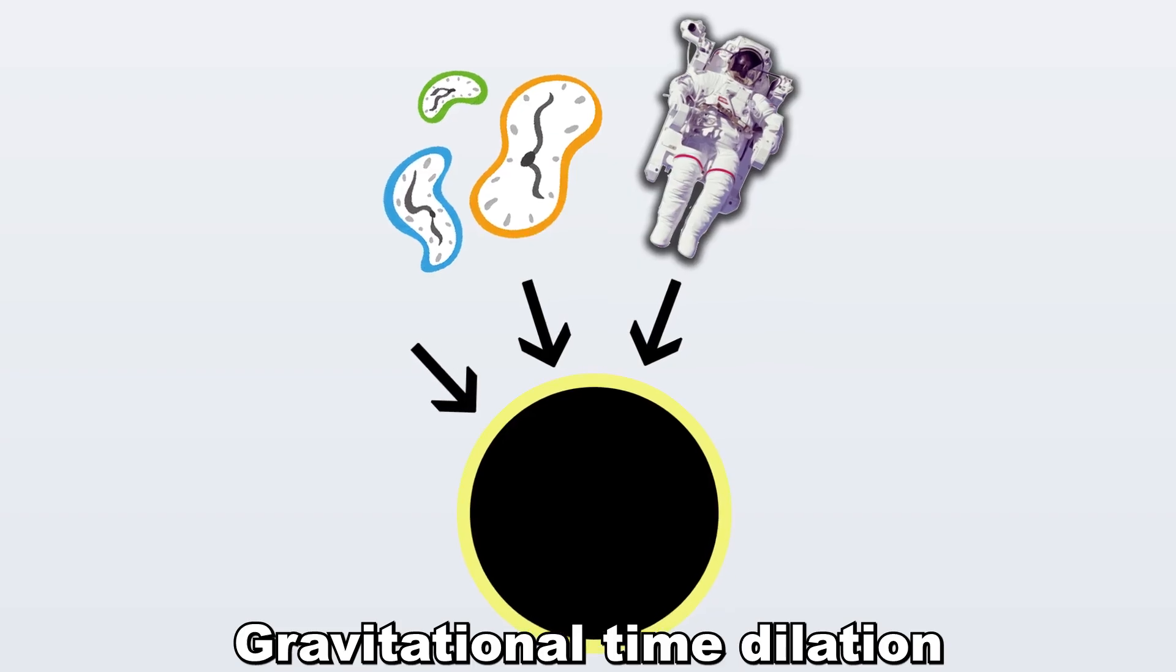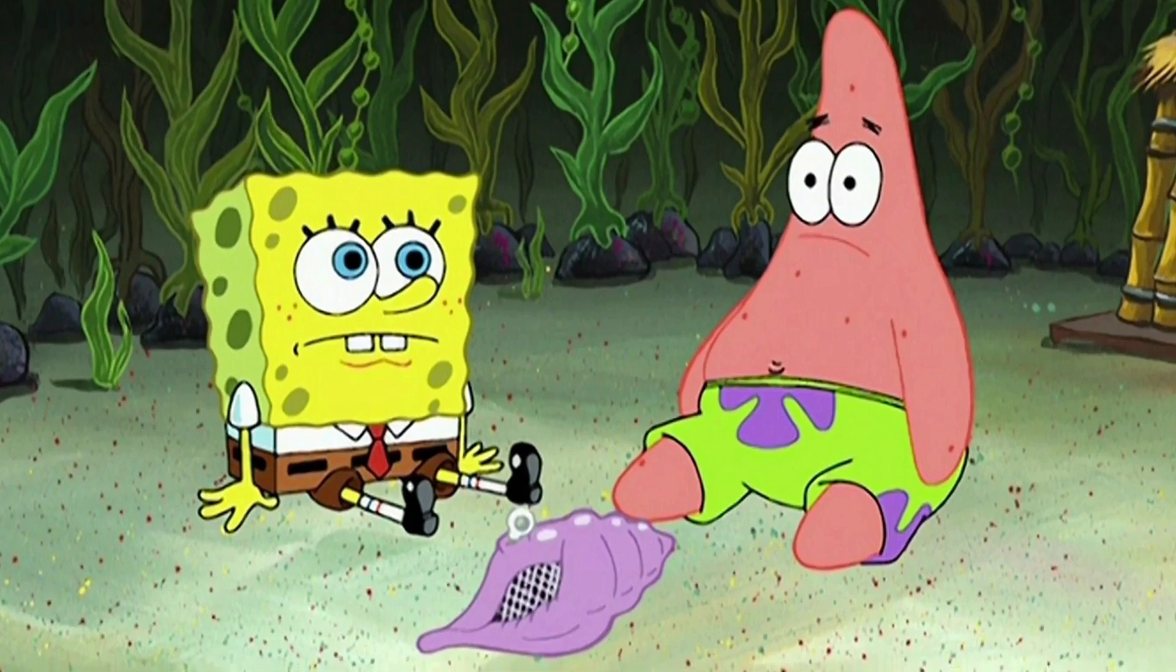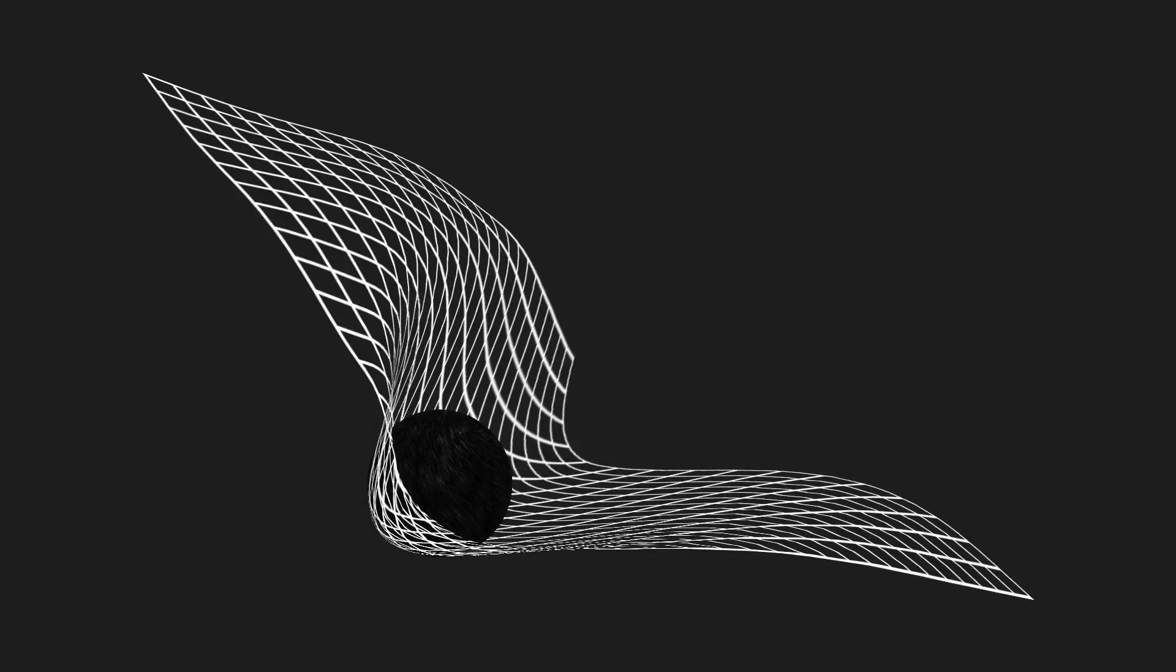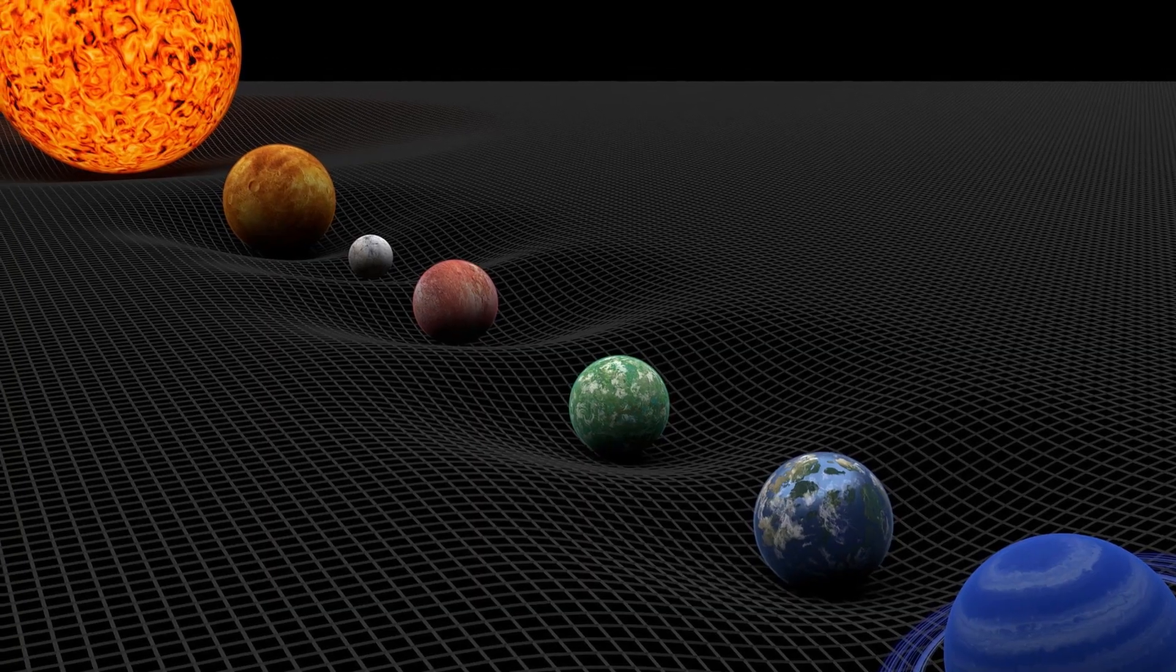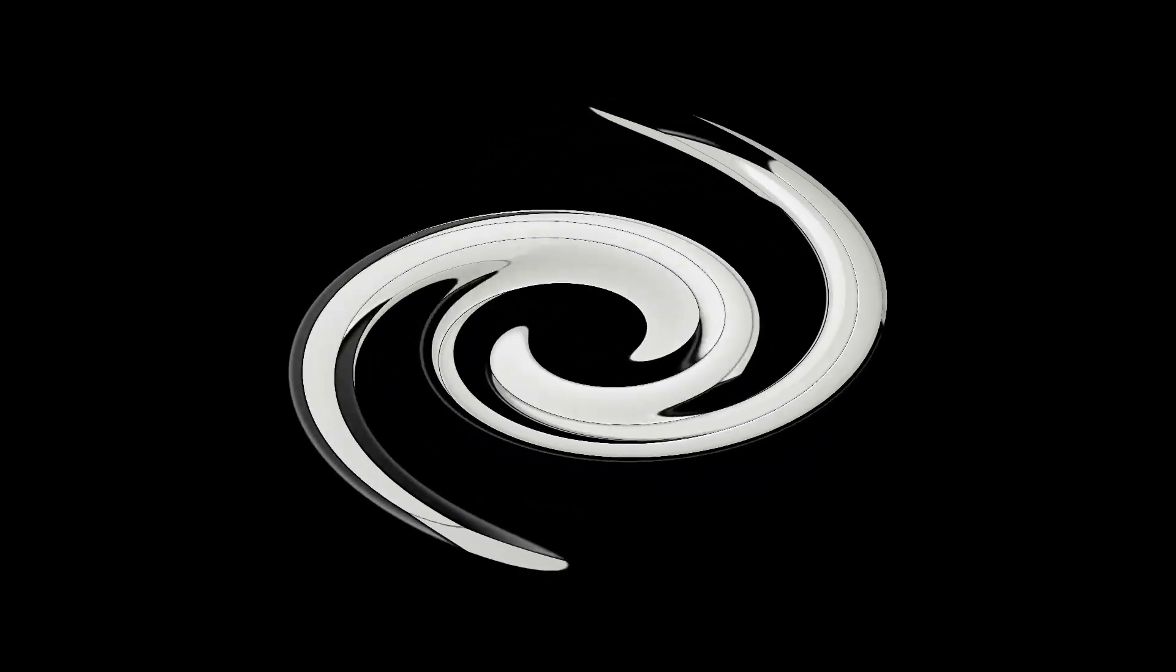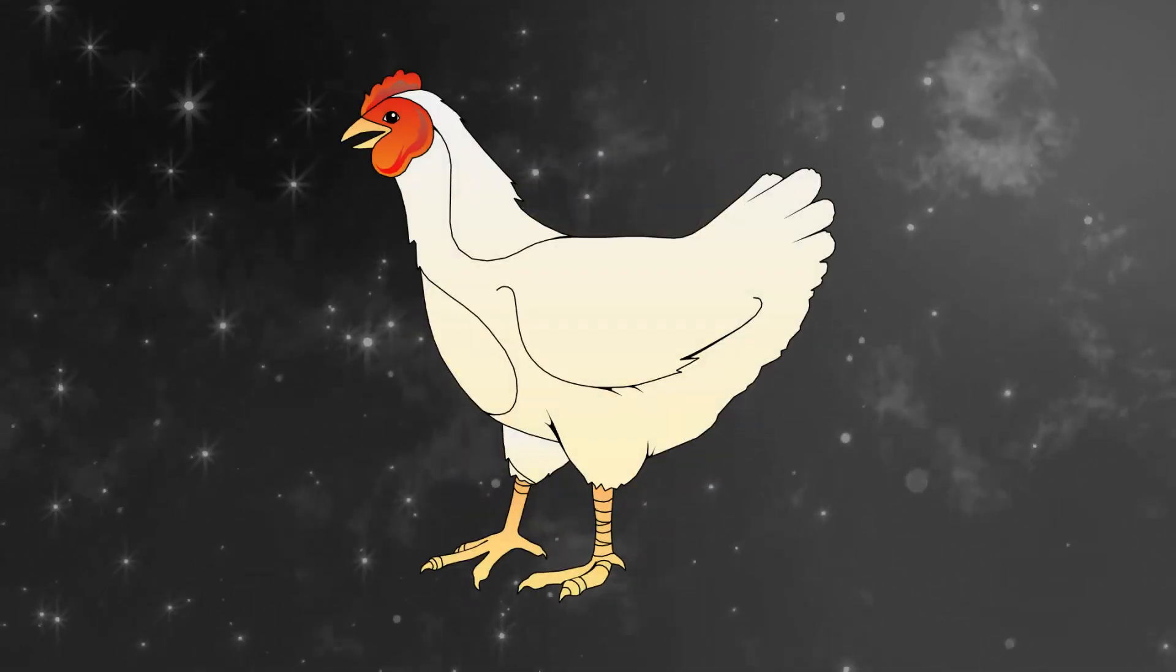The second method is gravitational time dilation. Instead of speed, just stay near a massive object like a black hole that warps space-time into a deep dent. Time slows in stronger gravity. If you spend an hour near a black hole's edge, decades could pass on Earth. But surviving the tidal forces there is really improbable. So that's traveling to the future.